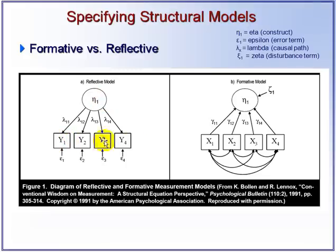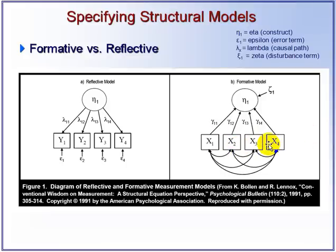It's important to remember that in the reflective measurement model, the correlation between the indicators is very important — the correlation among these indicators should be high. In the formative measurement model, it's the construct validity that's important. In fact, some researchers suggest that the measurement items in the formative model should have as low a correlation as possible.